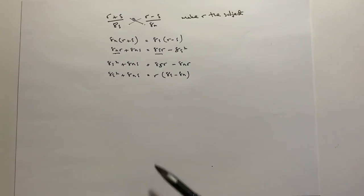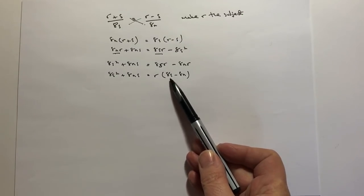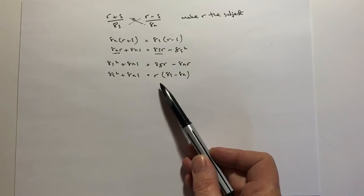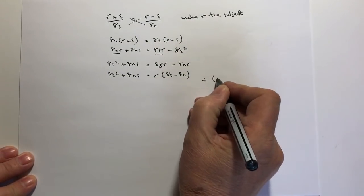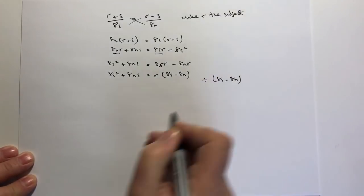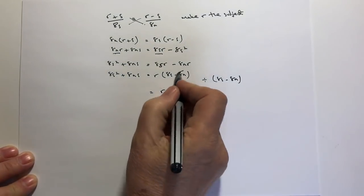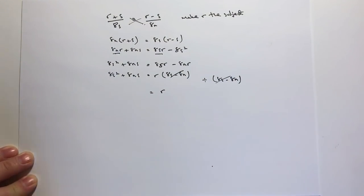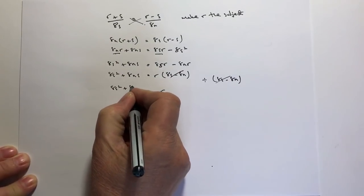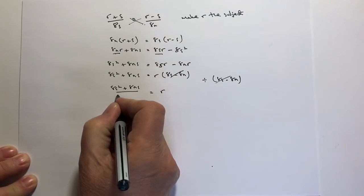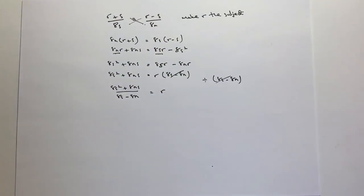OK, so now I've got this factorised value of r, and it means then that if I divide both sides by 8s minus 8n, it means that I'll be left with r on its own. So I'm going to divide both sides by 8s minus 8n. Now if I do that, on the right-hand side I get r, because these two will effectively cancel themselves out. And on the left-hand side I can write that as 8s squared plus 8ns divided by 8s minus 8n. And that's equal to the value of r.